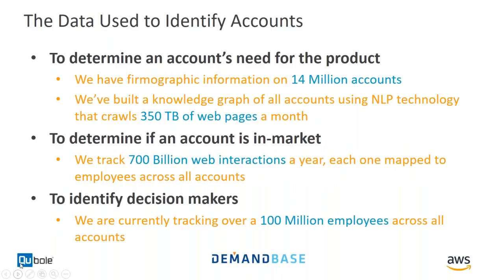To get into the nuts and bolts: to determine if an account has a need for a product, we have a data set of about 14 million possible accounts we track at any point in time. We know firmographic information about them — revenue, number of employees, location, industry. We also have a knowledge graph built through a natural language processing engine crawling the World Wide Web, finding everything it can about each account and figuring out how these accounts are connected, putting that into a structured graph.